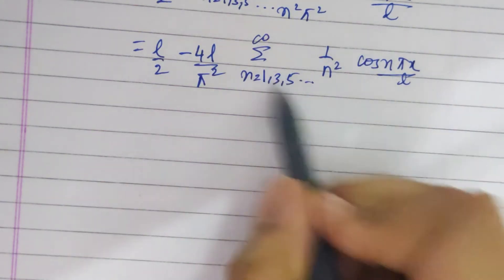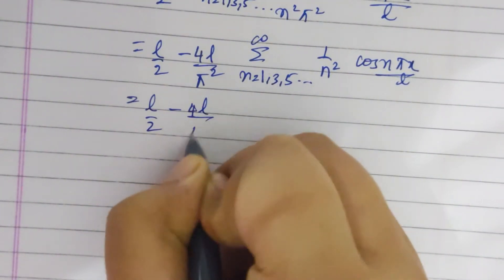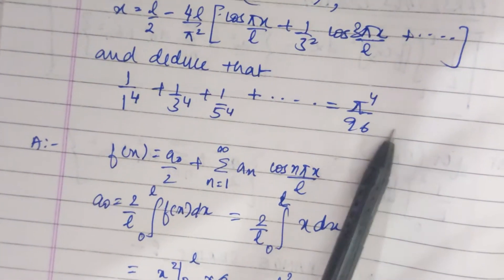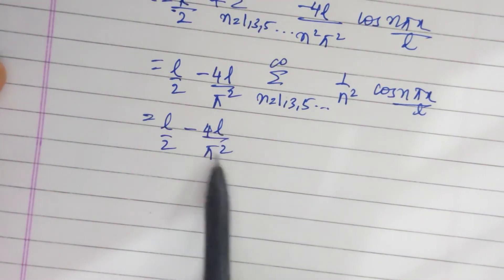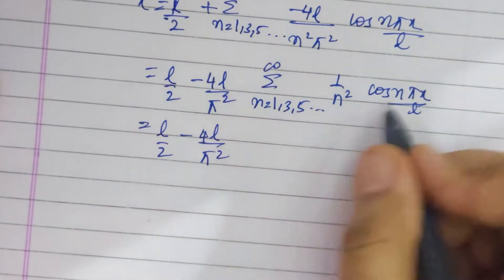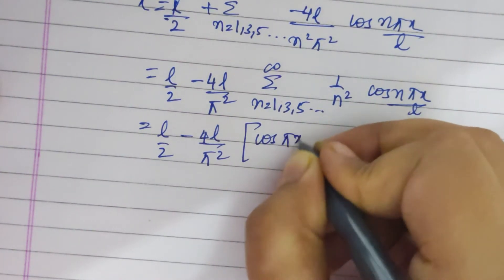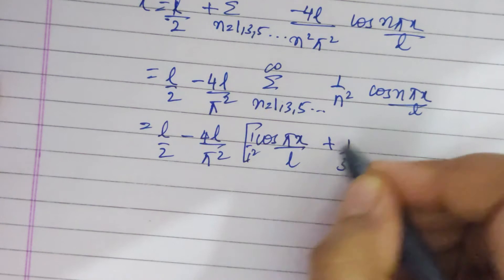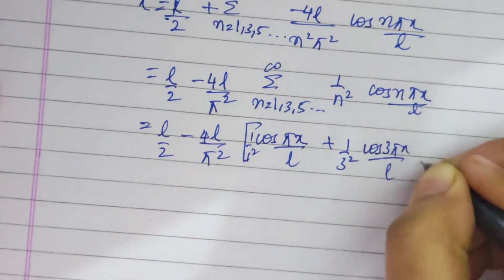Opening up this term: l by 2 minus 4l by pi squared, substituting n equals 1, 3, 5 one by one, we get 1 by 1 squared times cos(pi x by l) plus 1 by 3 squared times cos(3 pi x by l), and so on. We need to deduce that the expression equals pi to the power 4 by 96, which is why we are expanding it.